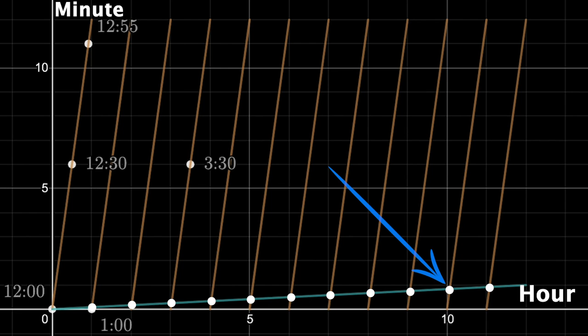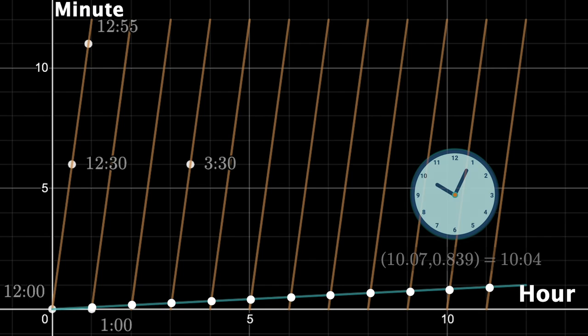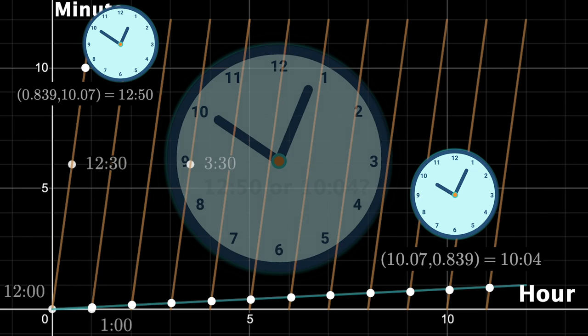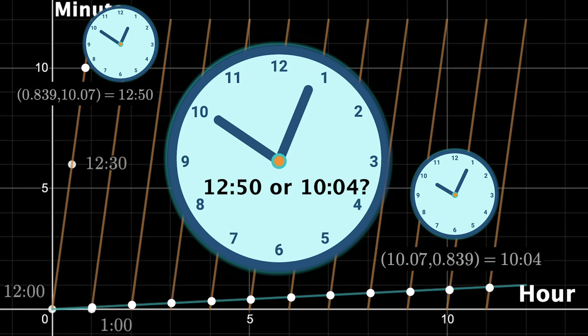For example, this intersection here represents 10:04 and about 12 seconds. If I flip the hour and minute hand, we get a time on that first line segment, specifically at 12:50 and about 21 seconds. At those two moments, you cannot determine the time on our unique clock, because both potential times would be valid.